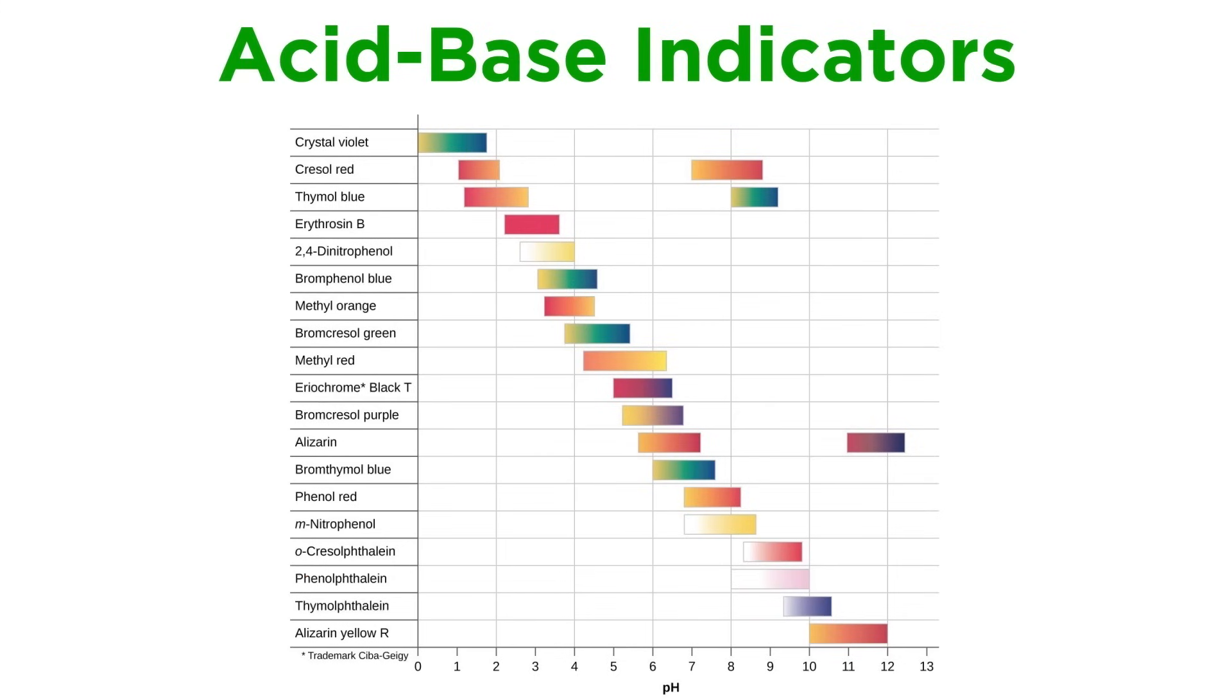We can look at a diagram with a wide variety of indicators and their respective color change intervals, which will range from a pH close to 0 all the way up to above 12. Some even have more than one color change interval because these are substances capable of more than one proton transfer.